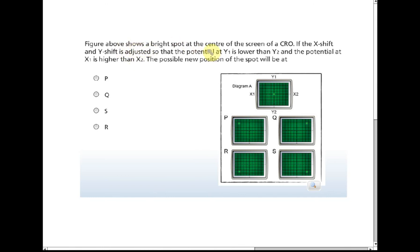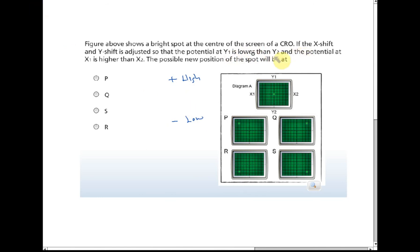The next figure shows the bright spot at the center of the screen. The settings are adjusted so that the potential at Y1 is lower than Y2, and the potential at X1 is higher than X2. Higher means positive and lower means negative. So Y1 lower than Y2 means Y1 is negative and Y2 is positive. X1 is higher than X2, so X1 is positive and X2 is negative.